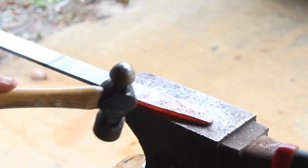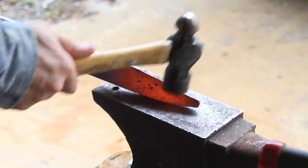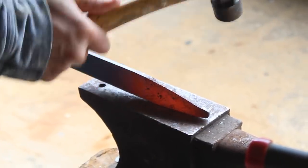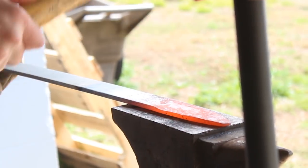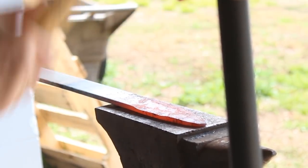For my dagger, I started with quarter inch 1084 high carbon steel. I've heated it up and hammered it to shape. Now I'm going to go ahead and hammer the bevels in.